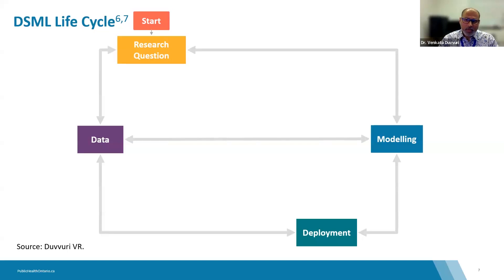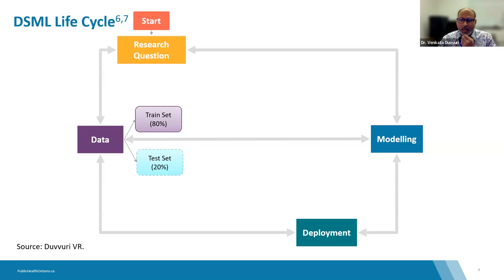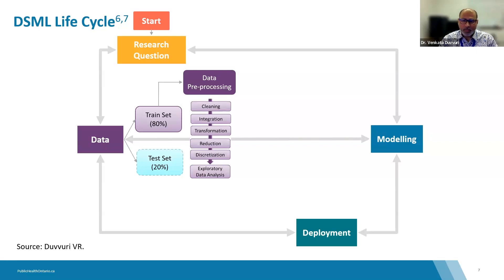The DSML life cycle is composed of four major stages executed iteratively: identifying a research question, data-related processes, model development, and deploying the optimal model. Data splitting into training and test datasets is a common and essential practice. In the data pre-processing step, raw data is assessed using statistical and machine learning techniques to ensure data quality, handling missing values, treating outliers, dealing with inconsistencies, and transforming data into a format suitable for exploratory data analysis. Exploratory data analysis helps review data quality and grasp insights in relation to the research question.